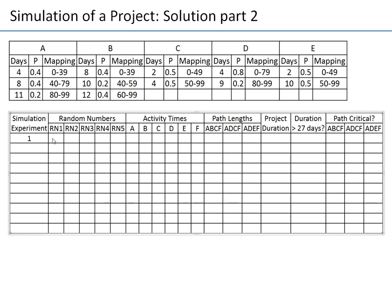For experiment 1, using five random numbers from Excel: 57 for A maps to 8 days; 14 for B maps to 8 days (shortest time for B); 76 for C maps to 4 days; 45 for D maps to 4 days; 89 for E maps to 10 days. F always takes 5 days.